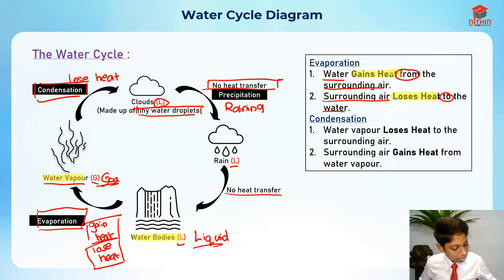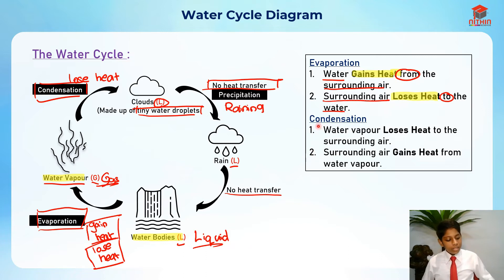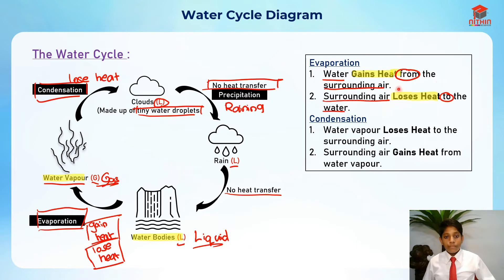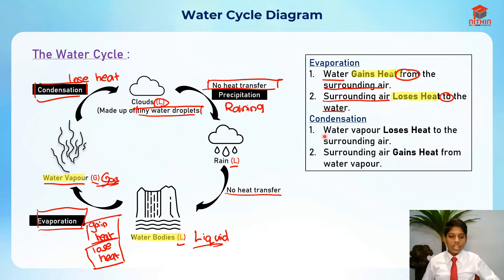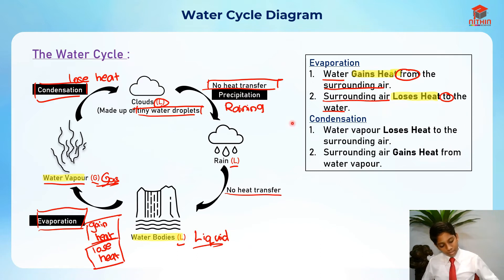So: water gains heat from the surrounding air, or surrounding air loses heat to the water — these two mean exactly the same thing, and you can state either one when they ask how it evaporates. And it is the same structure for condensation. For condensation, we can either say water vapor loses heat to the surrounding air, or the surrounding air gains heat from the water vapor. These two are exactly the same. I hope you understand that. Now let's move on.